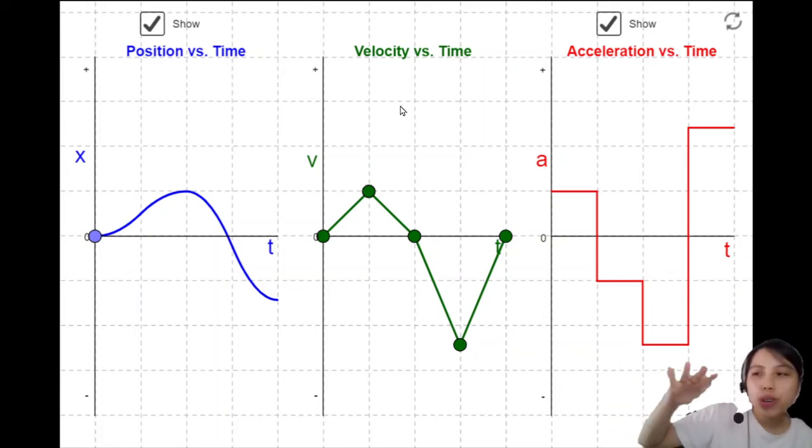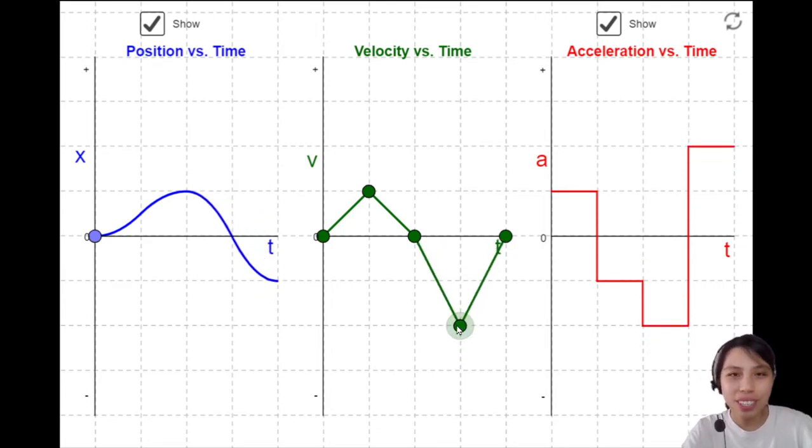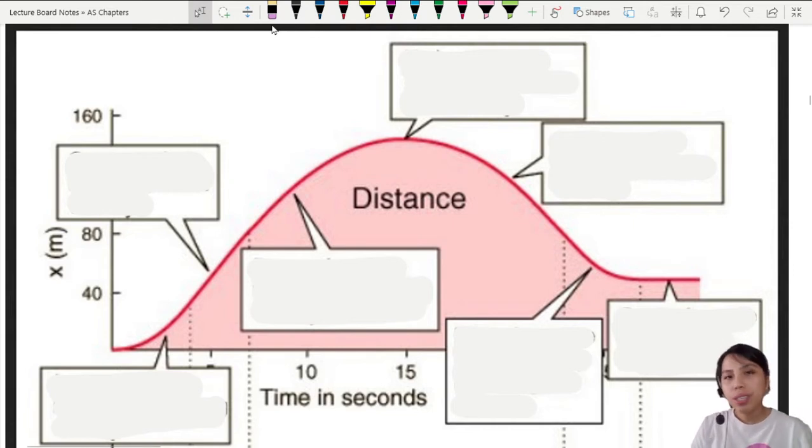In the previous video, we looked at how to translate between position, velocity, and acceleration graphs by looking at their gradient and how they affect each other. In this video, we'll go a little bit further on understanding graphs.